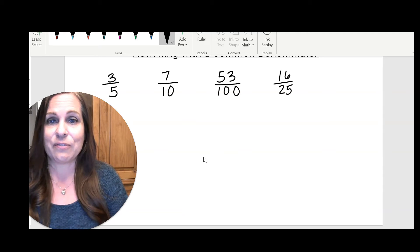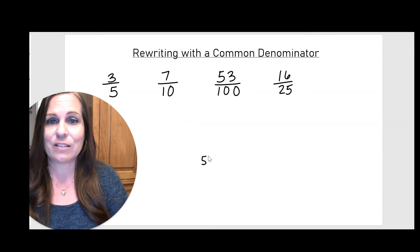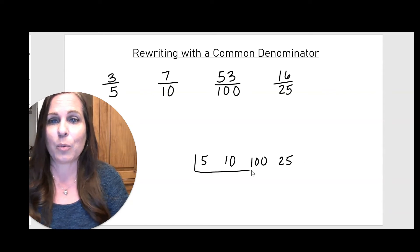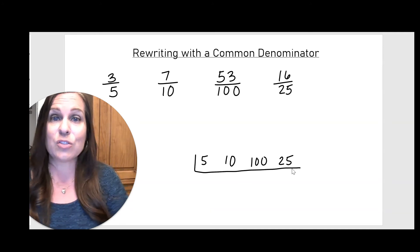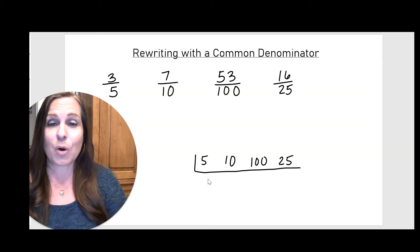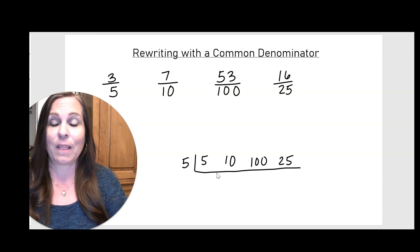So I'm going to write my four numbers here: 5, 10, 100, and 25. And I'm going to think of what number I can divide into all four of these with no remainder. So all four of these numbers are divisible by five.